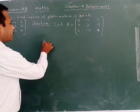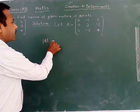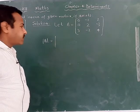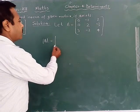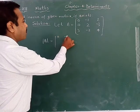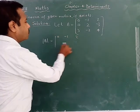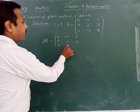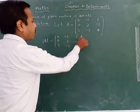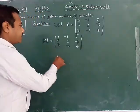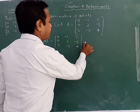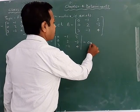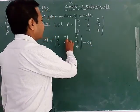And now you have to find determinant A for knowing the existence of the inverse. Mod A is equal to the determinant of the matrix: 0, minus 1, 2, 0, 2, minus 3, 3, minus 2, 4. And the value of the determinant — you expand along the first row: 0, minus 1, minus 2.